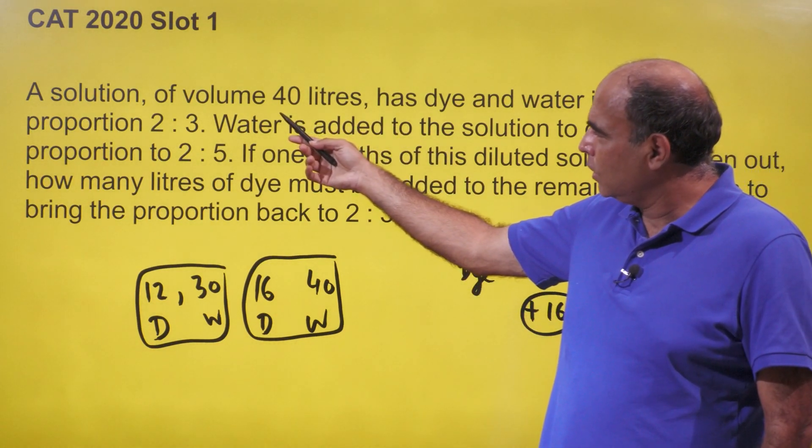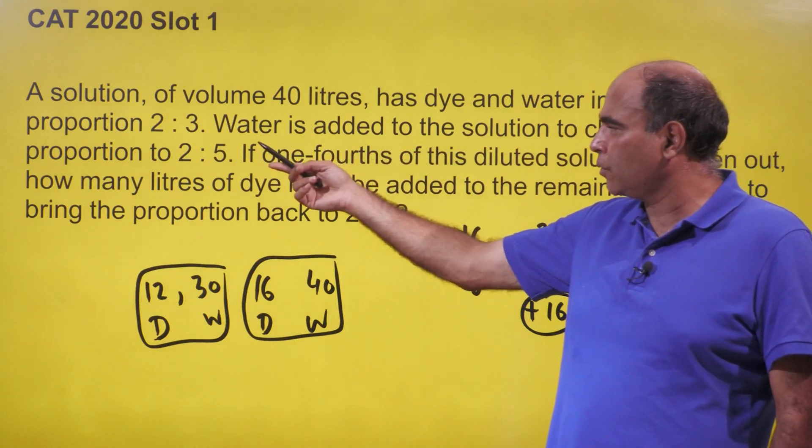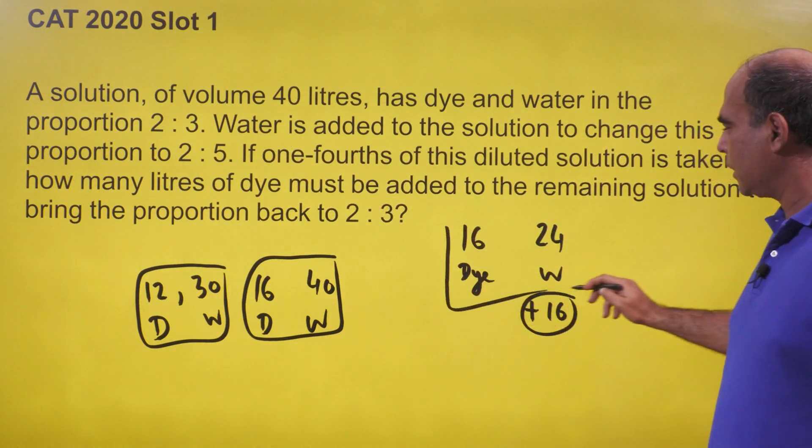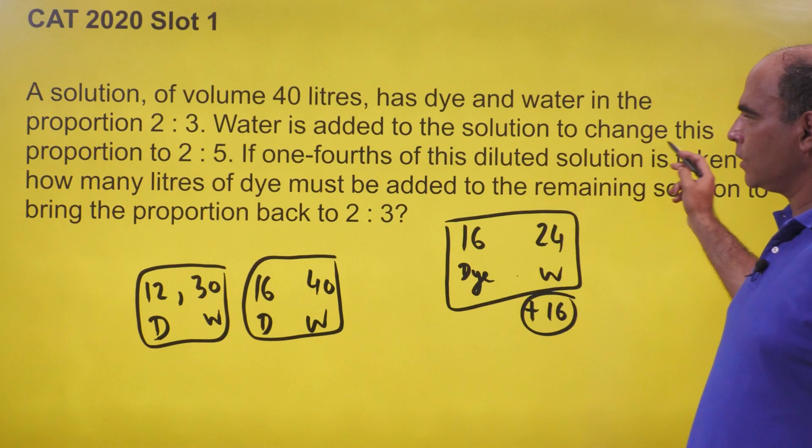A solution of volume 40 liters has dye and water in the proportion 2 is to 3. That's dye 16, water 24. Water is added to the solution to change this proportion to 2 is to 5.